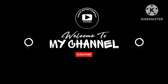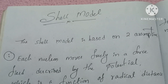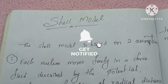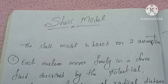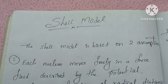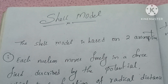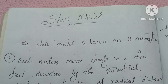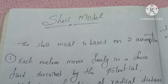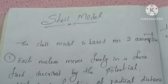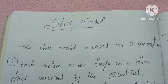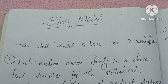Welcome to the 4th semester of physics, APRO 5. In modern physics, we have four units to cover. In the first unit, the shell model is very important. We have explanations and questions about paper 5. If you want to add this class on the shell model by degree maths tutorials, subscribe to our channel. So let's talk about the shell model.